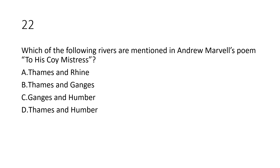Question number twenty-two: Which of the following rivers are mentioned in Andrew Marvell's poem 'To His Coy Mistress'? Option A: Thames and Rhine; option B: Thames and Ganges; option C: Thames, Ganges, and Humber; option D: Thames and Humber.